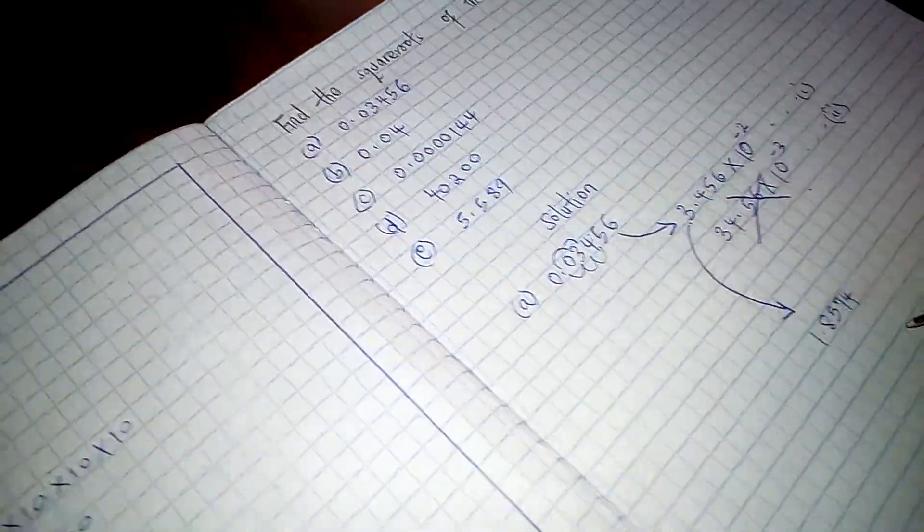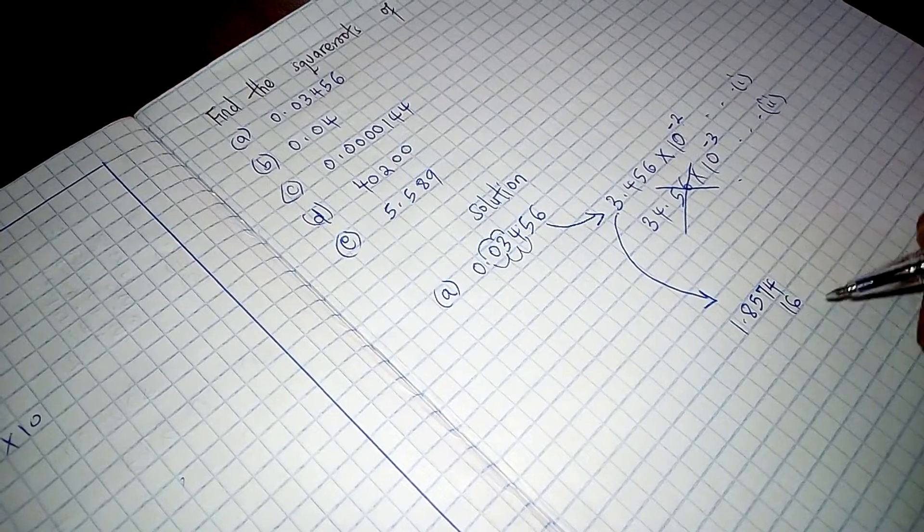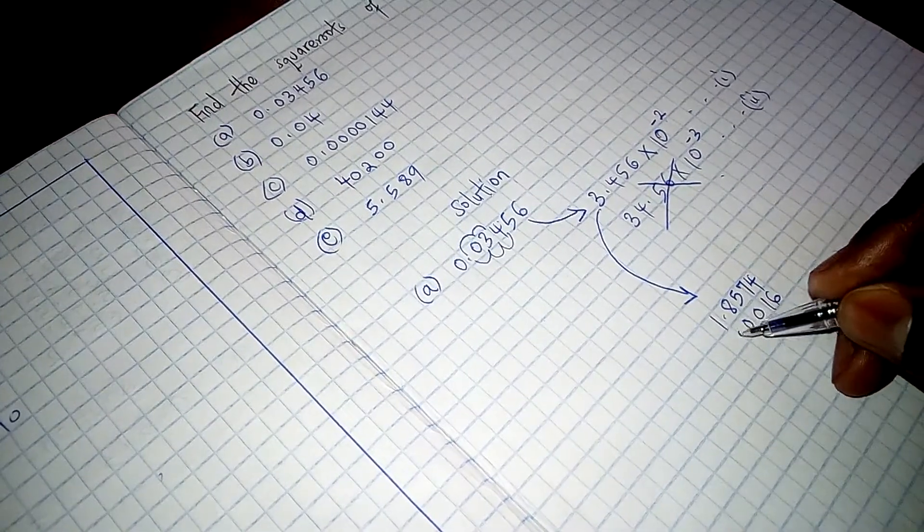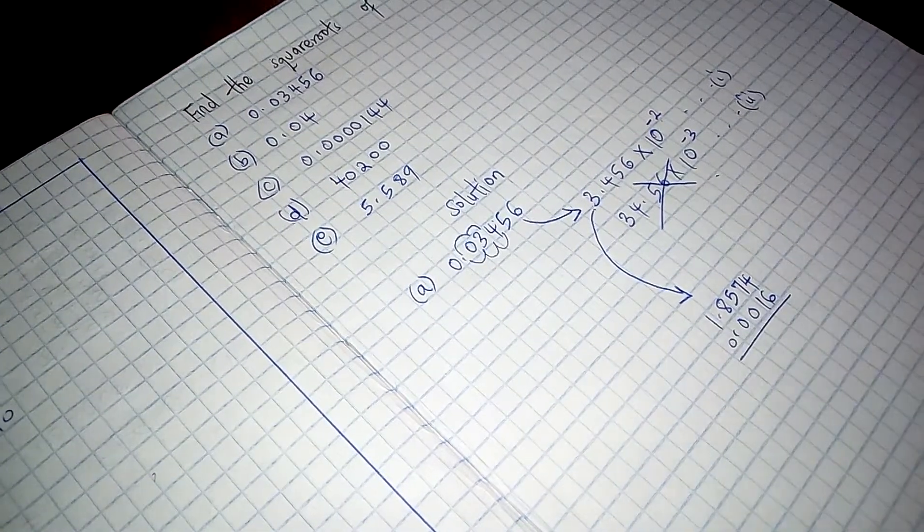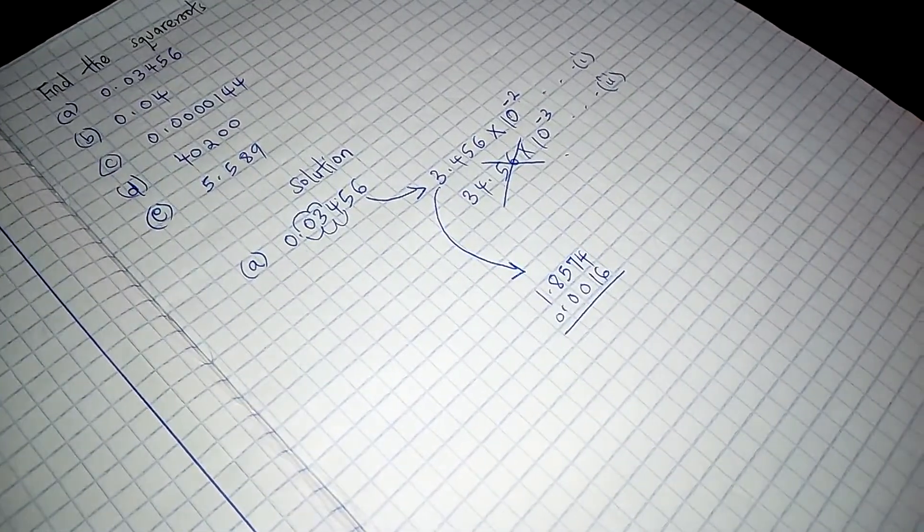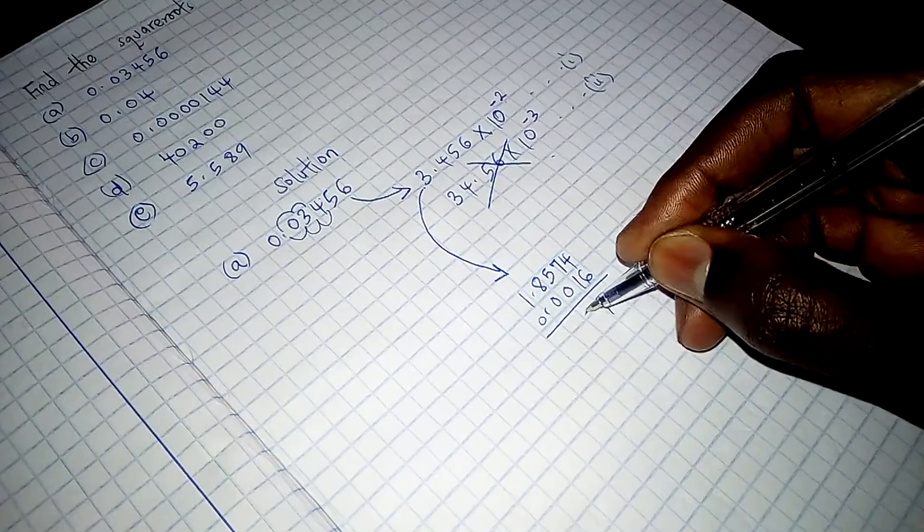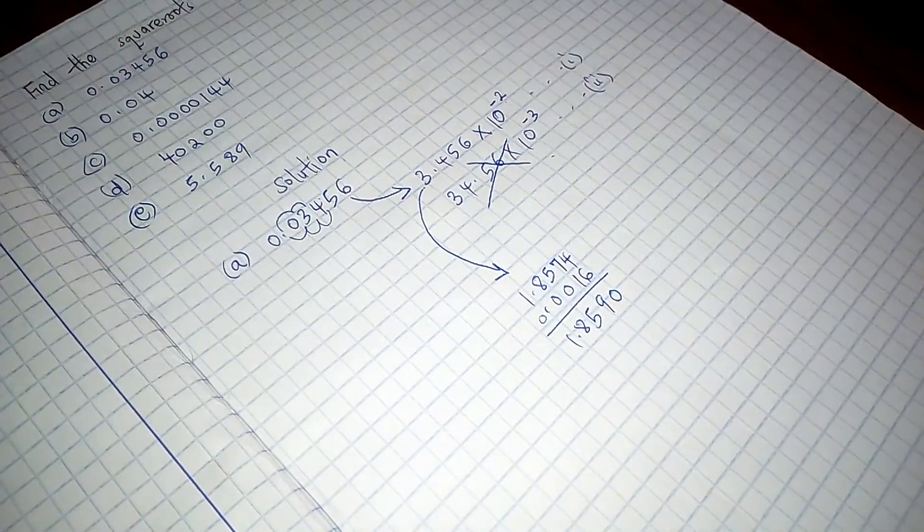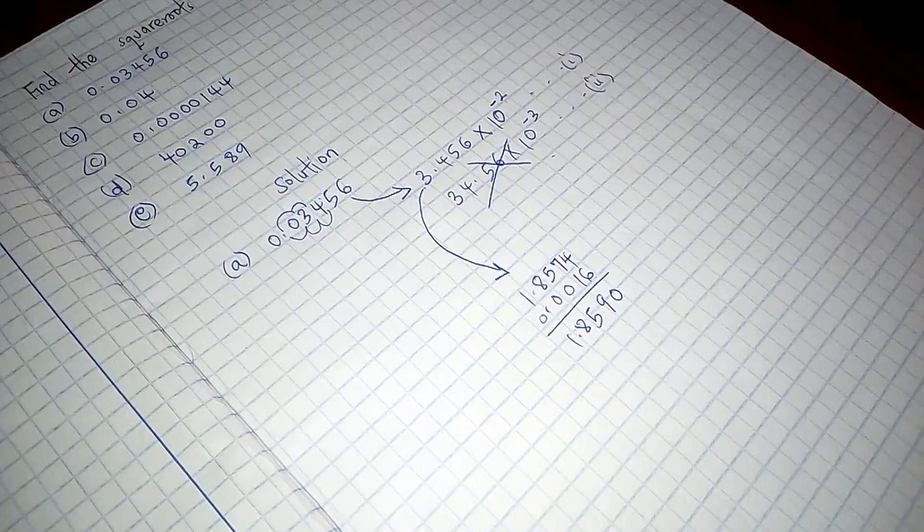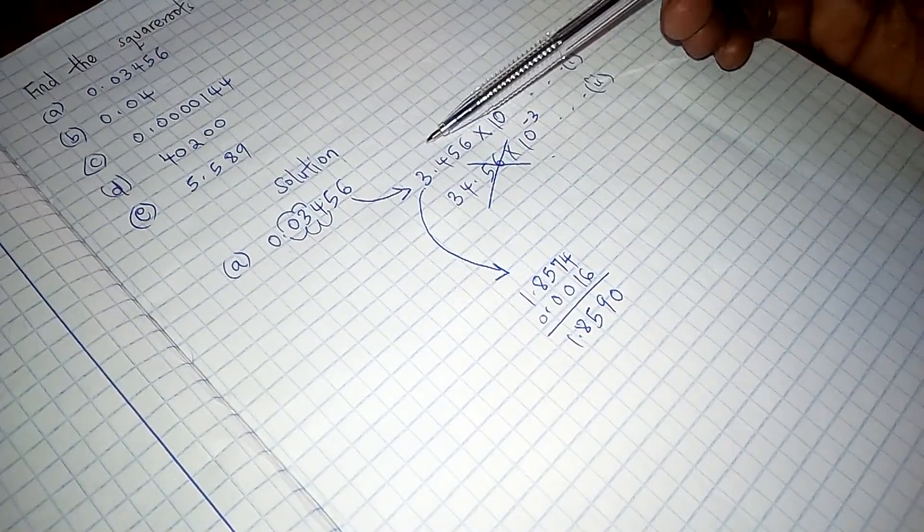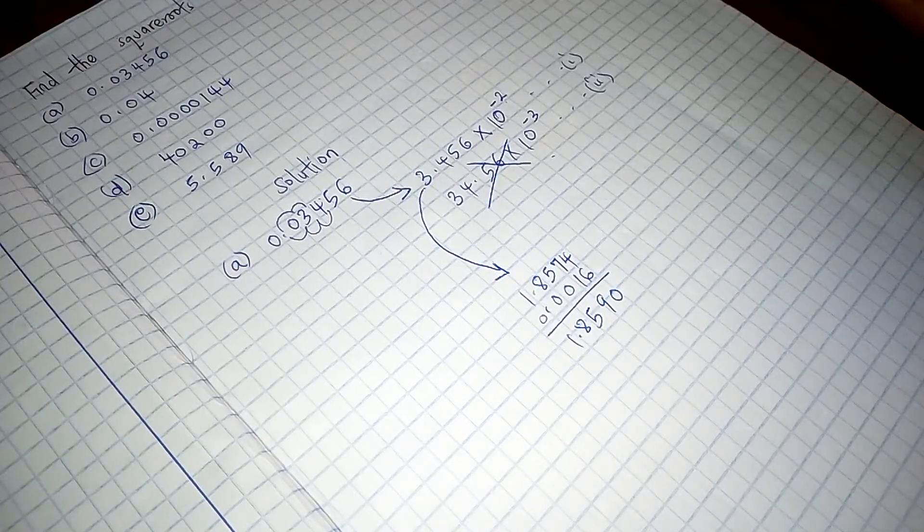So we are going to add 16. So that 16 as I've been telling you, we add it as a decimal. So these are just zeros. So by so doing, this becomes 1.8590. So that is actually the square root of 3.456.